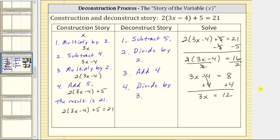The last step is to divide both sides of the equation by three. Simplifying, three divided by three simplifies to one, so one times x is x. x equals twelve divided by three, which is equal to four. The solution to the given equation is x equals four.